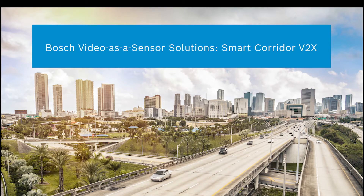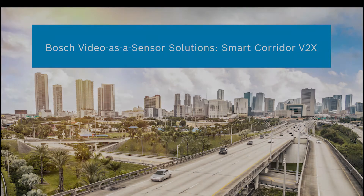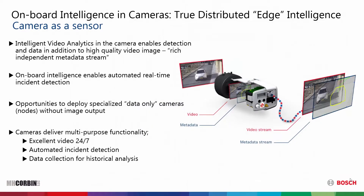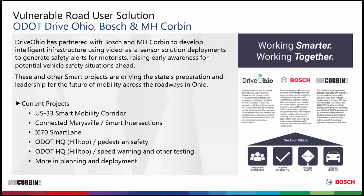The onboard analytics intelligence in a Bosch camera enables true video-as-a-sensor solutions. From the ground up, Bosch cameras are designed to be analytic sensors. The cameras have a second dedicated processor, which is picking up raw pixel data from the sensor and streaming out metadata at 15 frames a second. This enables the ability to create true smart infrastructure with cameras that give you excellent video, automated incident detection, and the ability to aggregate and collect data for historical analysis.